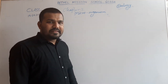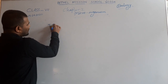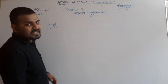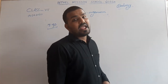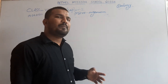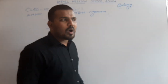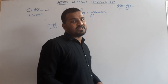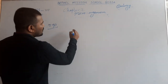In the year 1590, two brothers F. Johnson and Z. Johnson invented one type of specialized instrument which helps to observe the smallest organisms, known as a microscope.